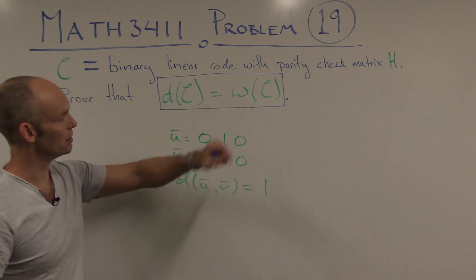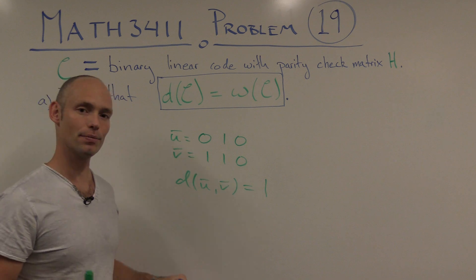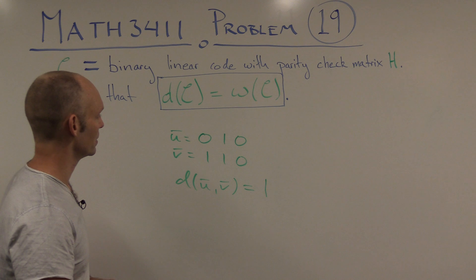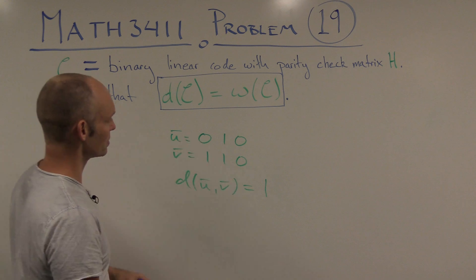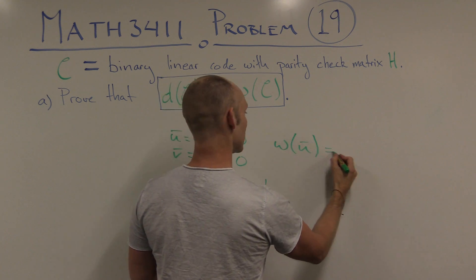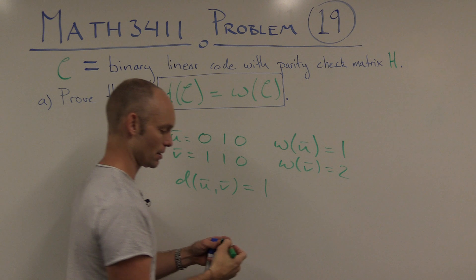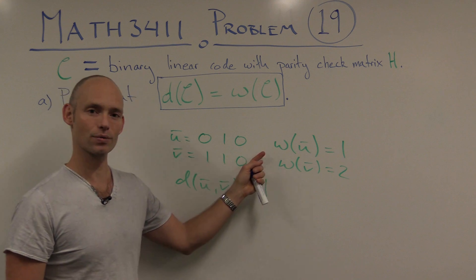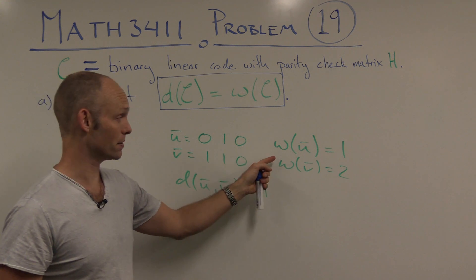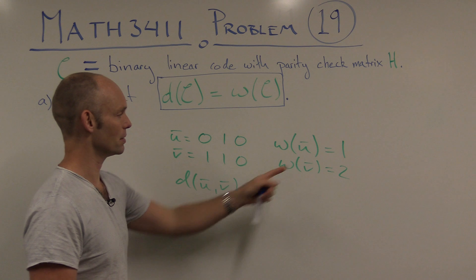What about the weight of the code? Here again it's about Hamming weights — it's the minimal weight of a codeword in C, except for the zero vector. For instance, if the code contains those two vectors, then the weight of U equals 1 and the weight of V equals 2. No non-zero codeword can have weight 0, so if the code contained U, it would have minimal weight equal to 1.